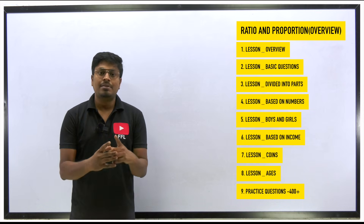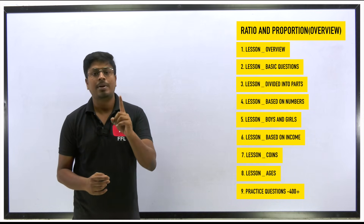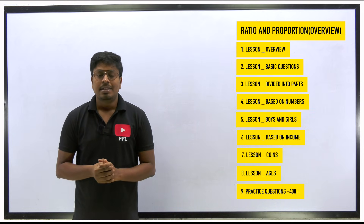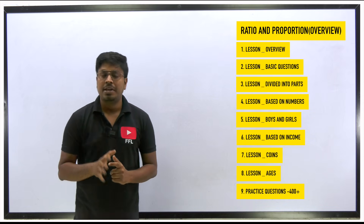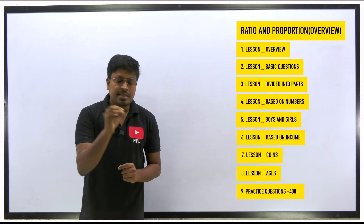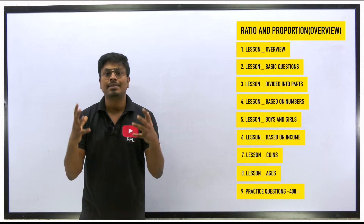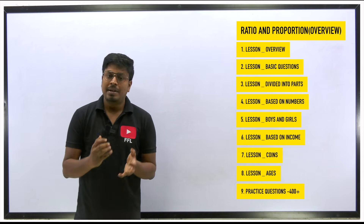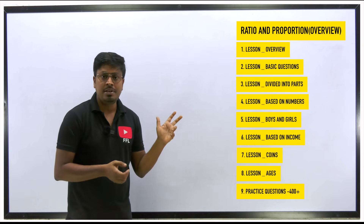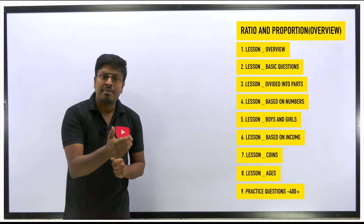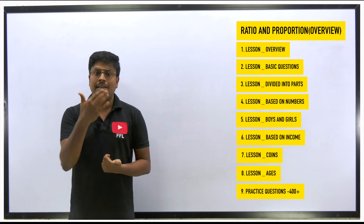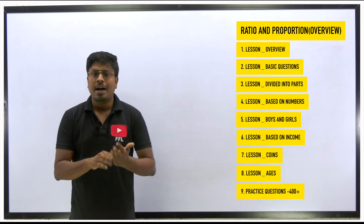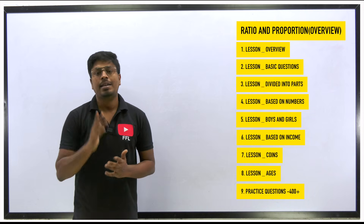According to me, I think I missed only one concept — not a critical one, but it is also a concept in quantitative aptitude — that is allegation and mixture. I thought of teaching it as a 9th lesson in ratio and proportion, but I didn't. Why? Because allegation and mixture is a huge concept — a vast syllabus where the basics alone take one to one and a half hours to learn. So I didn't include allegation and mixture here, but I have a separate video on allegation and mixture on my YouTube channel where I have taught the basics and how to solve those questions in exams.